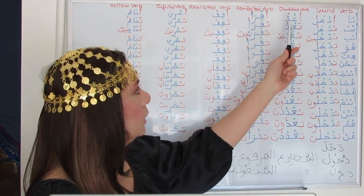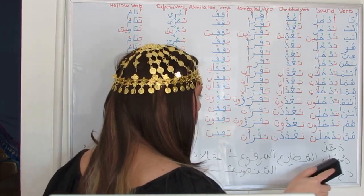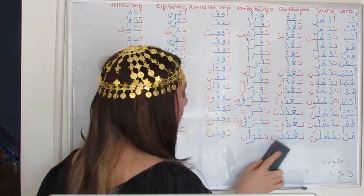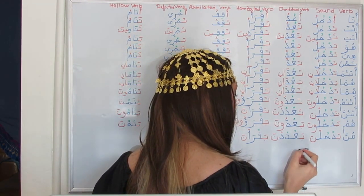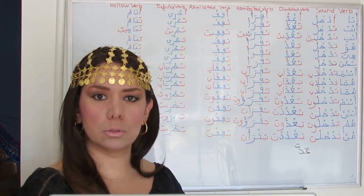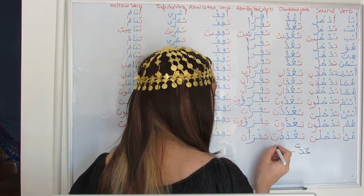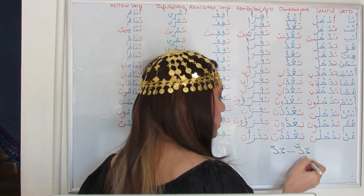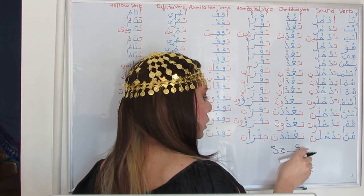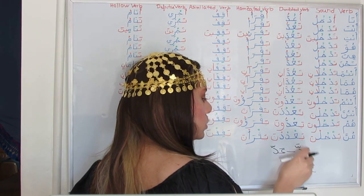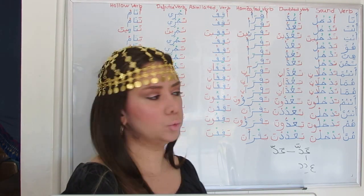Here we have an example of a doubled or geminate verb: 'adda.' Adda means 'to count,' and its verbal noun is 'adda' — counting. The root is Ayn, Dal, Dal — we disjoin the doubled consonants, giving us Ayn, Dal, Dal. Let's see how to conjugate it.